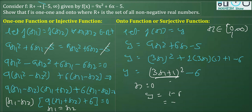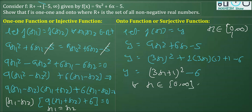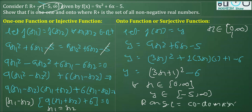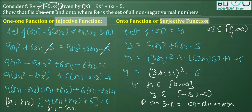For x belonging to [0, +∞), f(x) — which is y — belongs to [-5, +∞). The range we obtained equals the codomain, so we can write range = codomain. This proves the function is onto. Since the function is both one-one (injective) and onto (surjective), it is proved to be bijective.